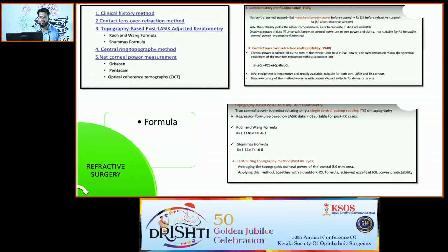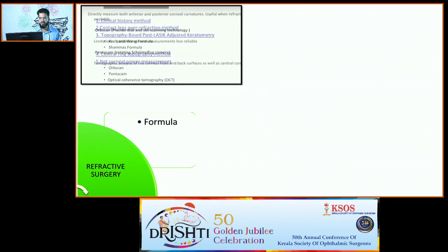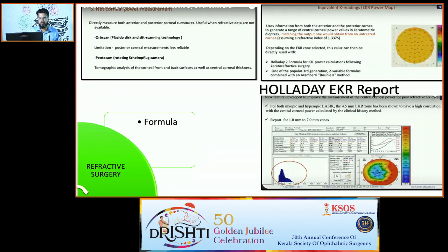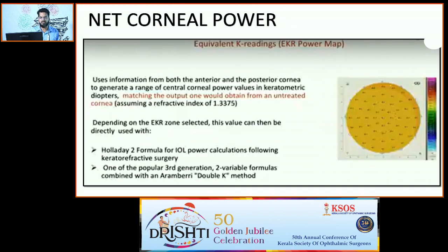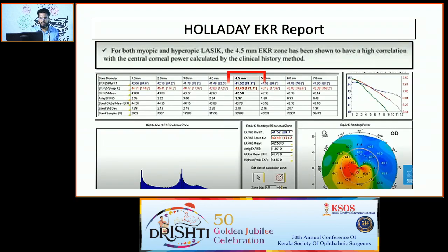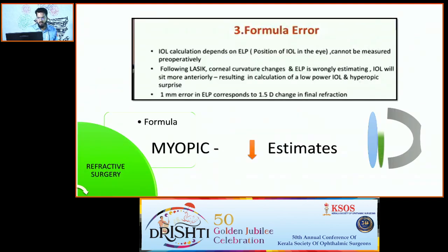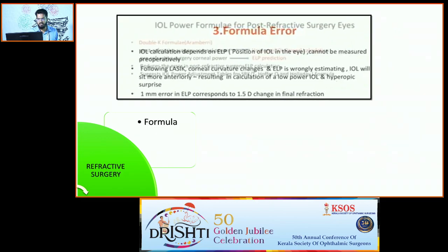Various formulas are available and gaining importance is the equivalent K reading calculable in the Pentacam — specifically the 4.5mm area EKR65 mean, taken as the K value. The formula error relates to effective lens position, which would be wrongly calculated as more anterior if this is not kept in mind.